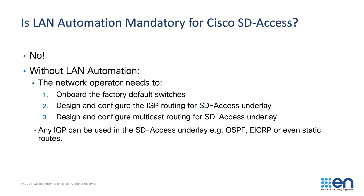LAN automation is not mandatory for the SD-Access underlay. You can instead configure the switches manually — that would mean onboarding them using plug-and-play or consoling into each switch to apply a routing configuration, username, password, and so on. You would need to design an IGP and configure it as the SD-Access underlay, and you may also need to design and configure a multicast routing solution if you have layer 2 flooding or native multicast replication in your SD-Access overlays. The upside of doing it manually is you can use any IGP — OSPF, EIGRP, or even static routes. However, the trade-off is a significant amount of work compared to LAN automation, which takes care of all of the routing design and configuration for you.